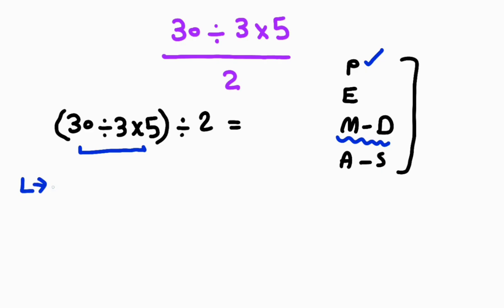30 divided by 3 equals 10. 10 times 5 equals 50. At the end, we have 50 divided by 2, so the final answer is 25.